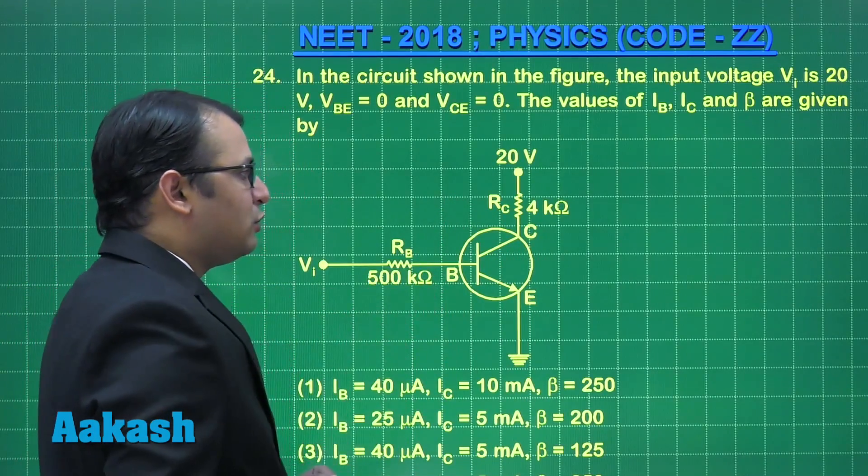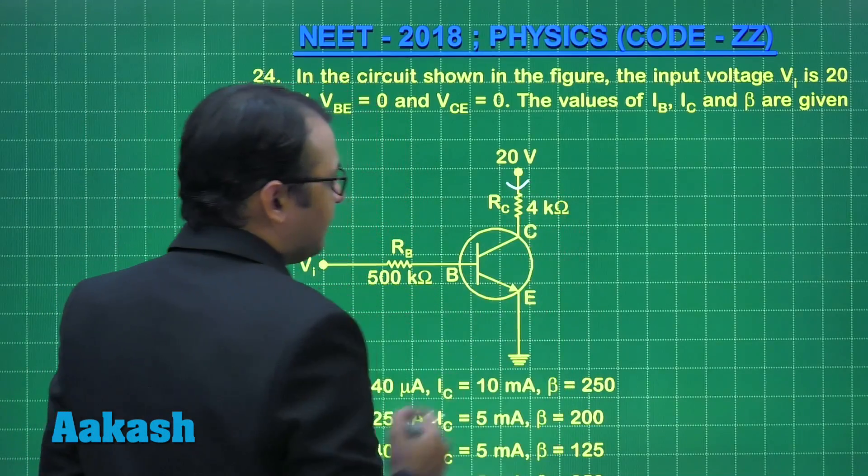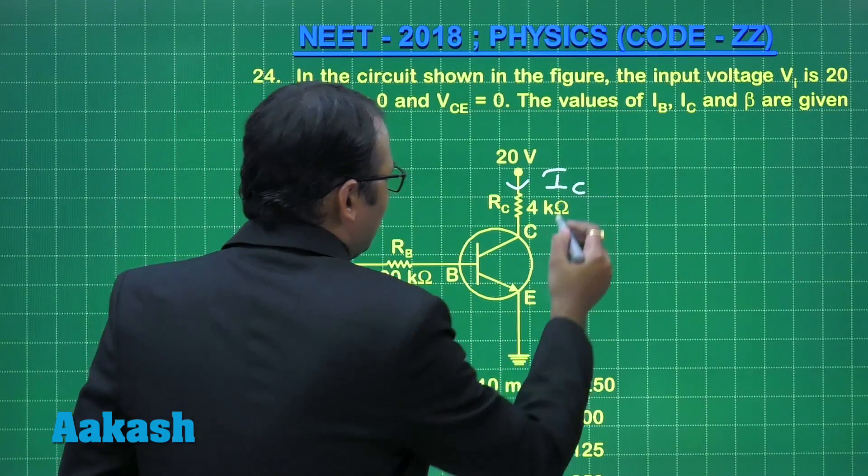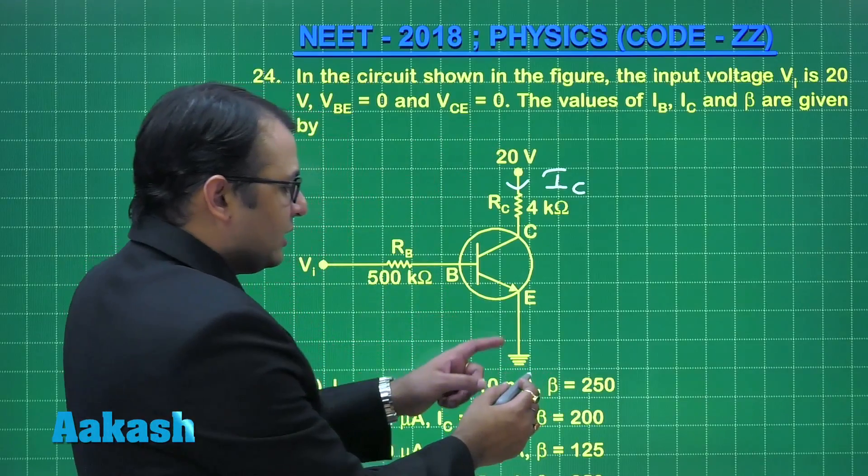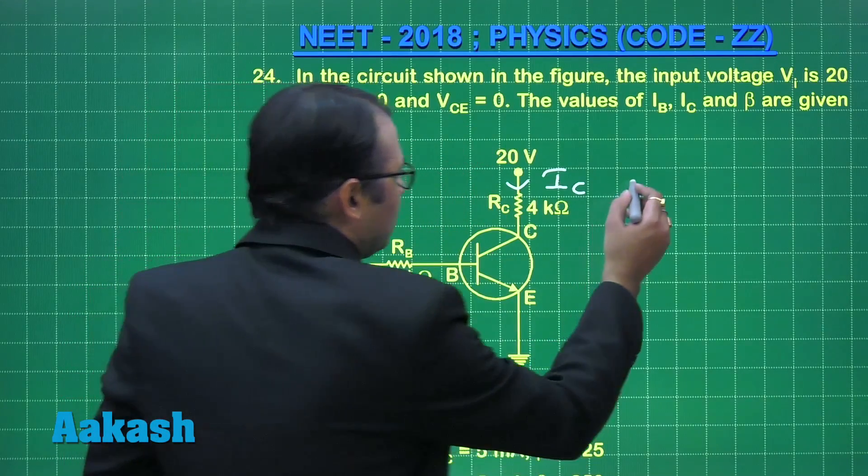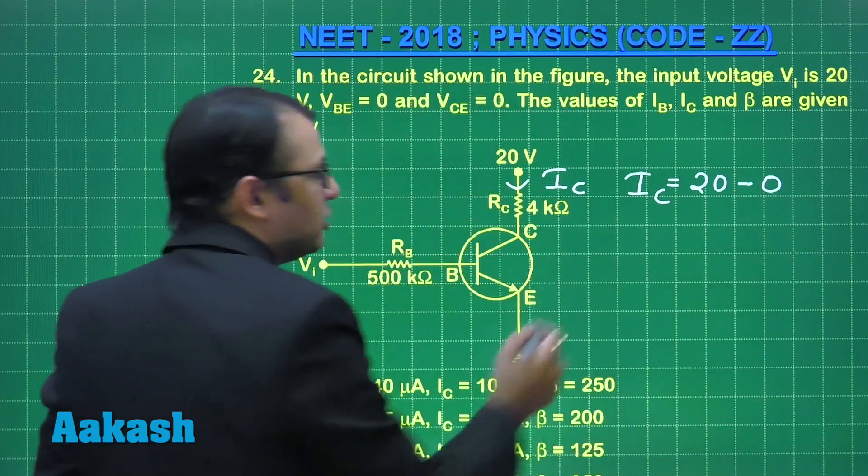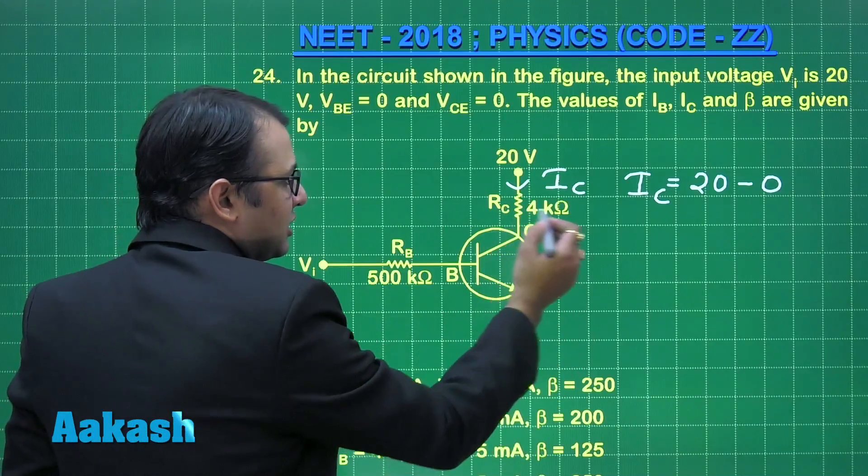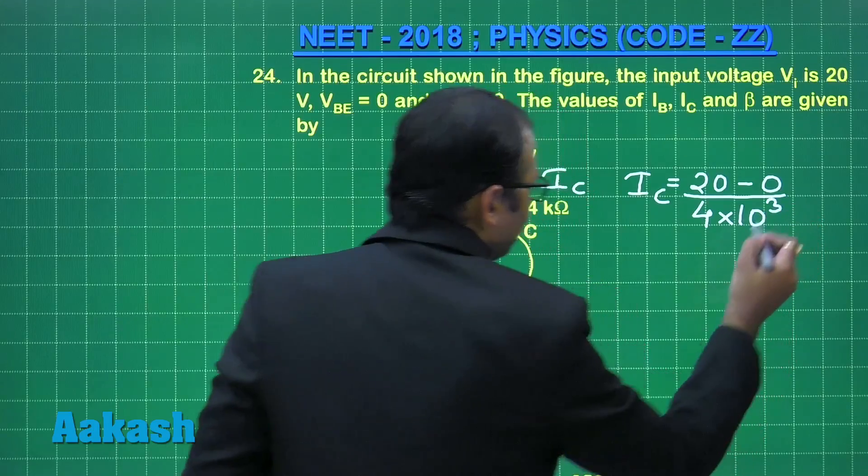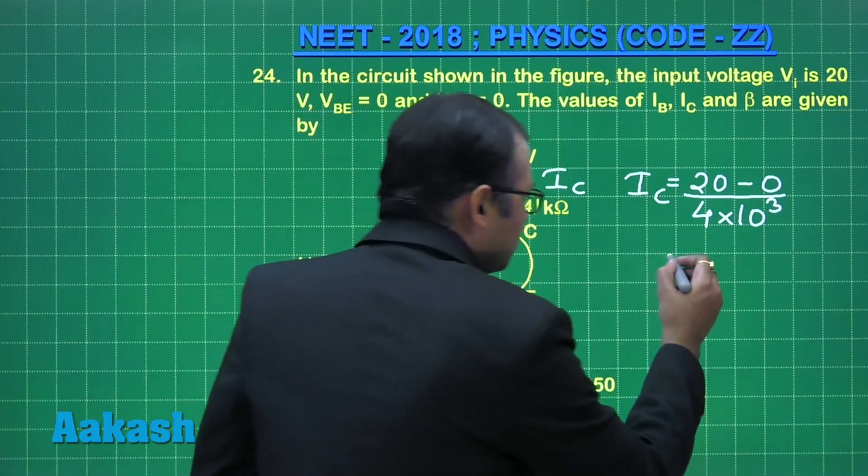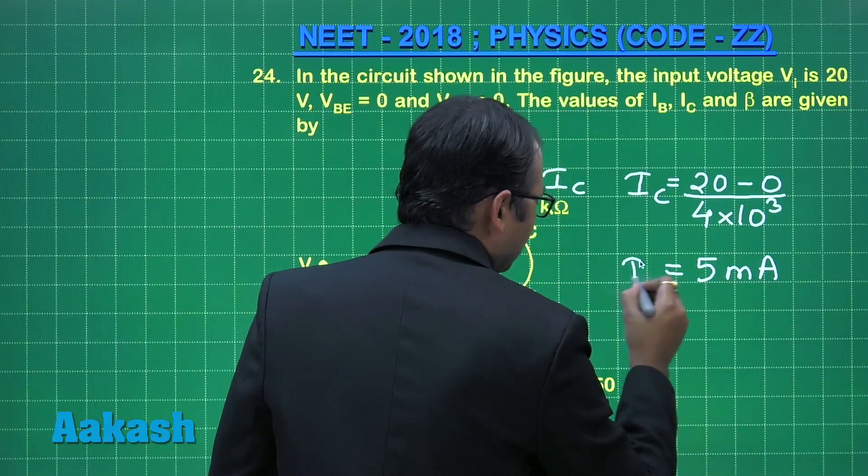First of all, where IC would be, that is collector current, will be here. Now if I want to find IC, let's see from here to here, what is the potential difference? Since it is grounded, where it's 0 volt, this is 20 volt. So we'll write IC would be equal to 20 minus 0, this is the potential difference. In this path, the resistance is 4 kilo ohm, so we'll write 4 into 10 to the power 3. This would be 5 milliampere IC.